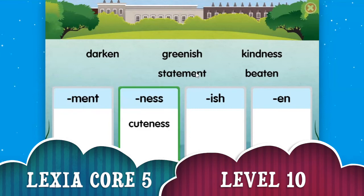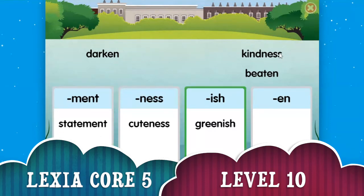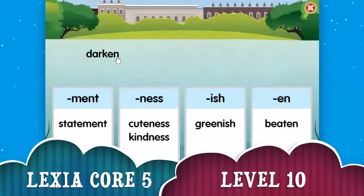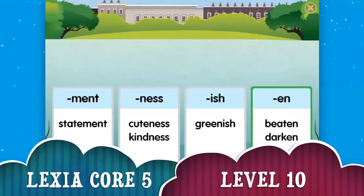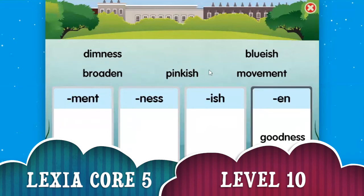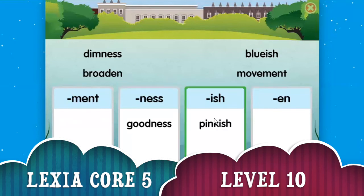Ness goes with cuteness. That's right. Look at that — the statement goes with ment. What else goes with ment? I don't think beaten goes with ment. I think kindness goes with ness — it's like making a orc. Beaten goes with n. Darken goes with n. Not the letter n, the suffix n. Suffixes are words that go at the end of the word. Goodness goes with ness. Ish goes with pinkish, bluish — I think that goes with ish.